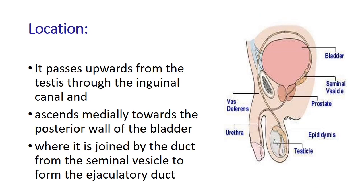Regarding the location of the vas deferens: it passes upward from the testis through the inguinal canal, then ascends medially towards the posterior wall of the bladder, where it is joined by the duct from the seminal vesicles to form the ejaculatory duct.